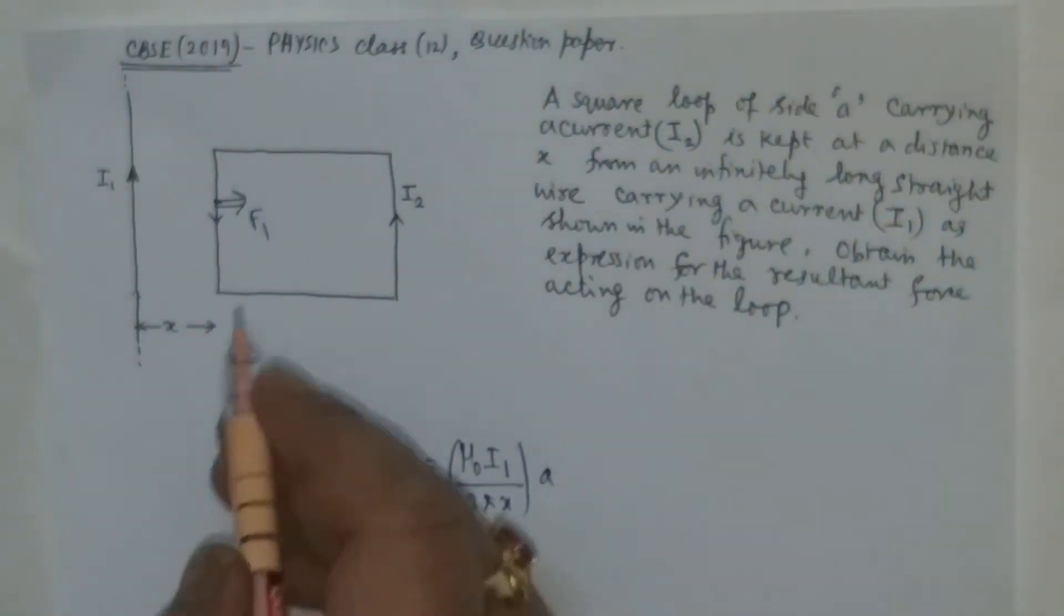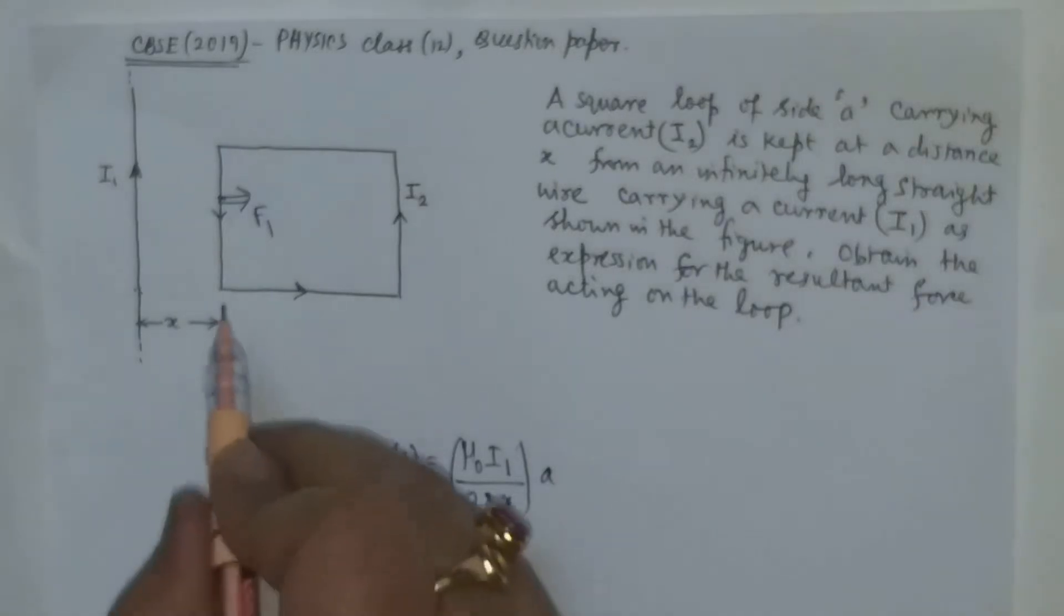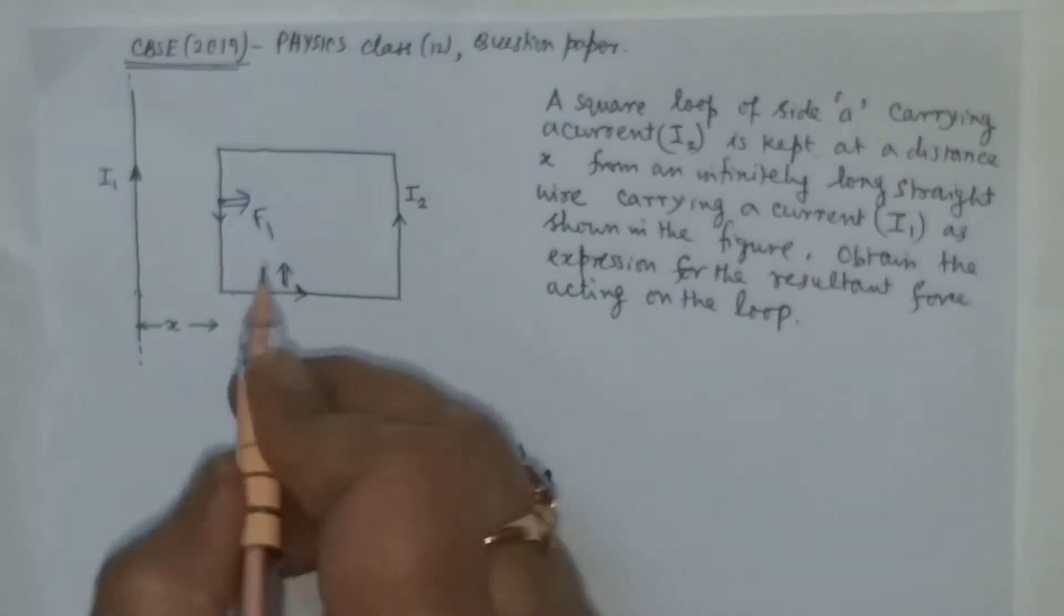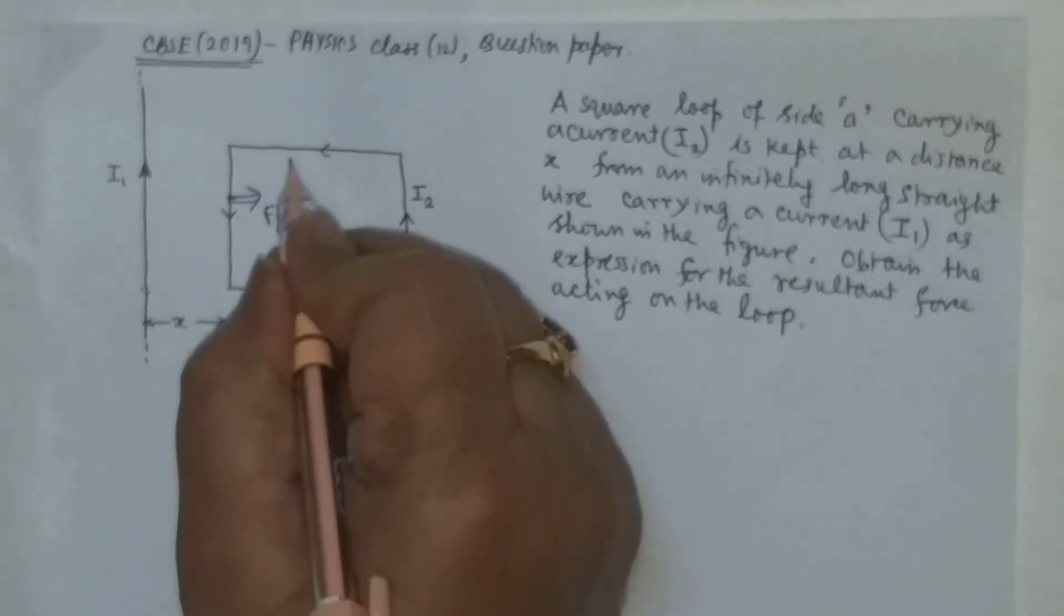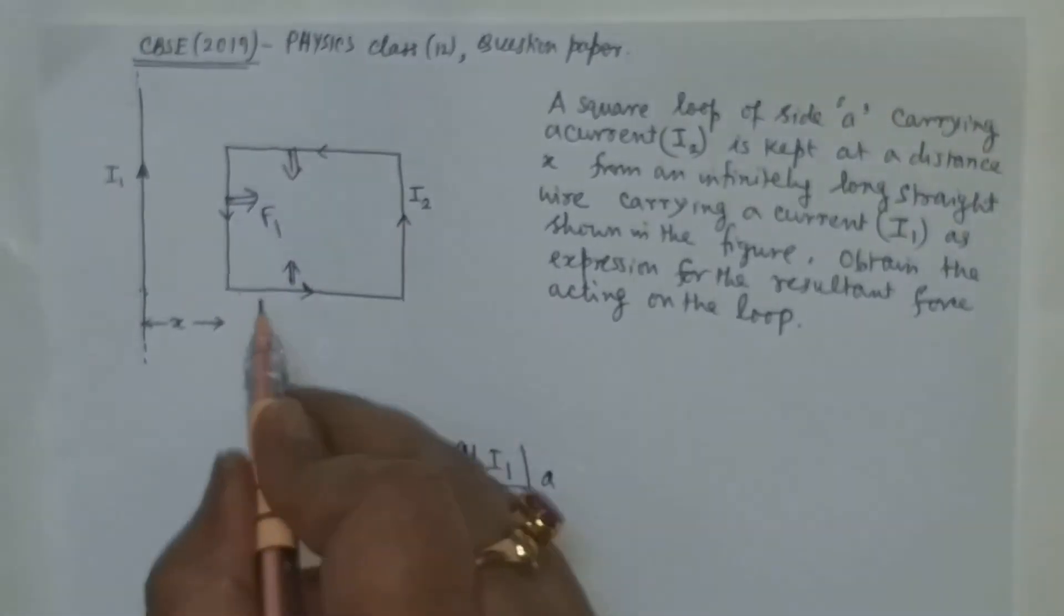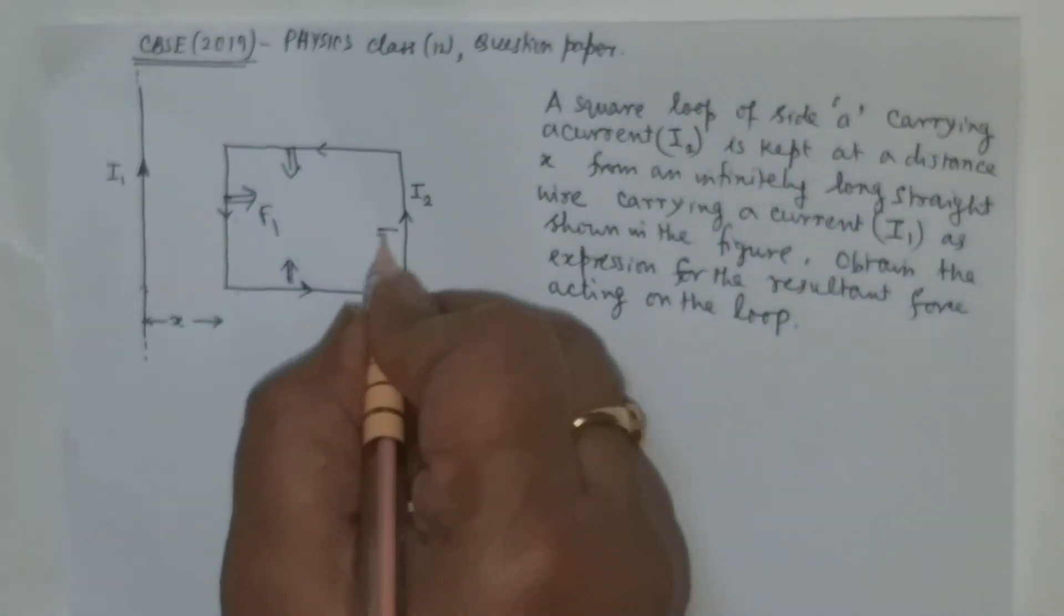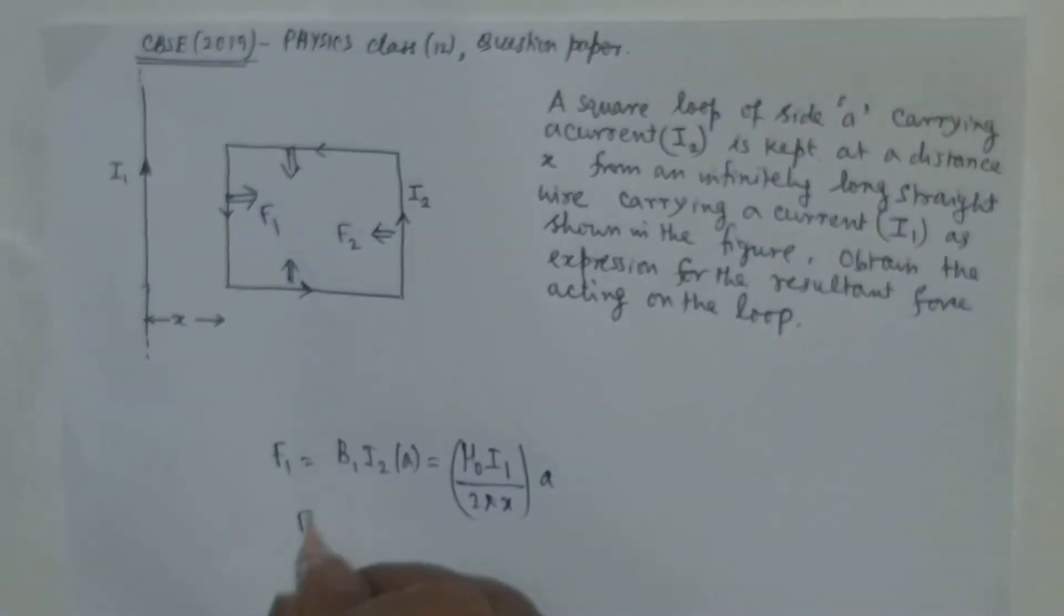Similarly, if you apply Fleming's left hand rule here, each and every point will be experiencing force in the upward direction, while the upper part will be experiencing force in the downward direction, and they will nullify the effect of each other. But here the force will be here in this direction, F2.